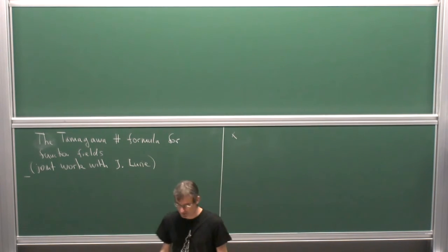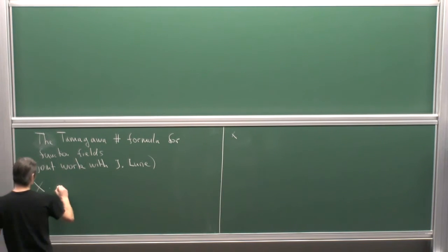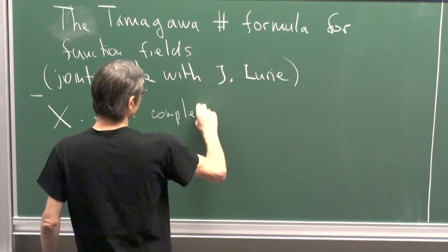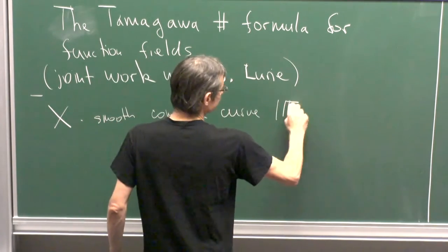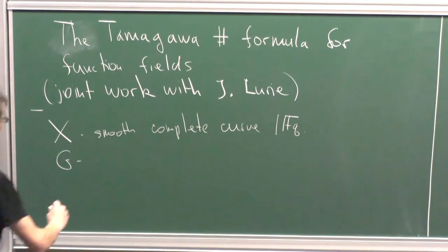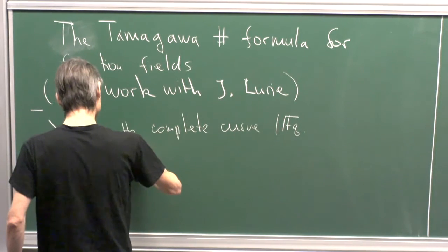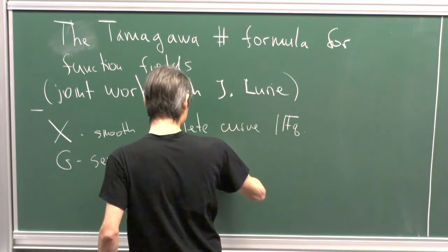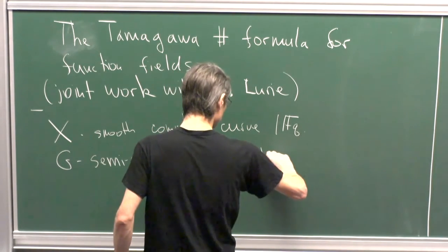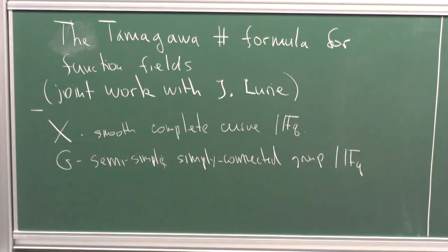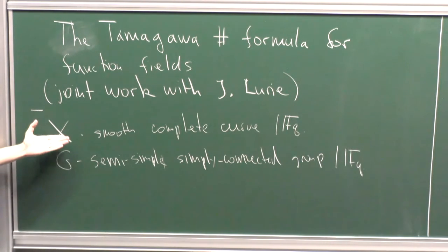I'll present a somewhat simplified context. We fix a curve X — a smooth, complete curve over a finite field. And we fix G to be a semi-simple and simply connected group. I'll fix it to be over the ground field, though more generally this story works for group schemes over the field of rational functions of the curve.